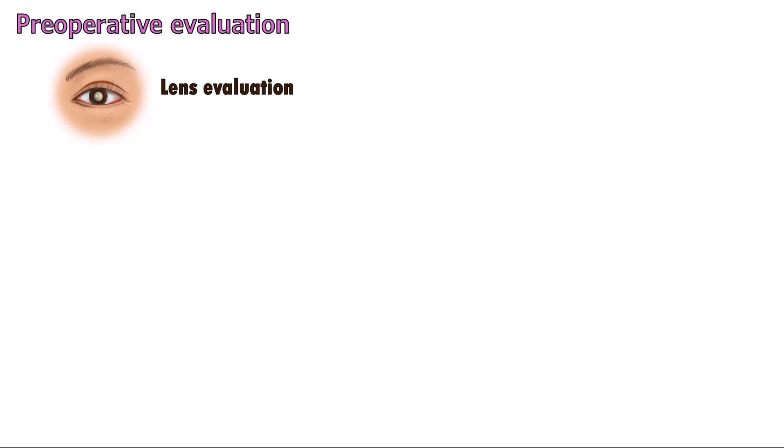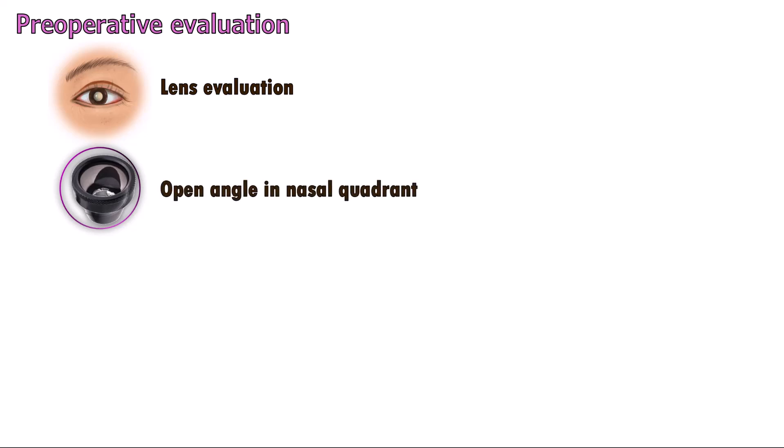In pseudophakic eyes, it should be checked that the patient does not have an anterior chamber intraocular lens. Gonioscopy is performed to confirm an open angle in the nasal quadrant and to confirm that the cornea is clear, offering an unobstructed view of the nasal angle.